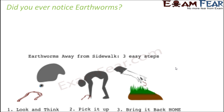Why do earthworms come to the surface during the rainy season? When there is too much rain, too much water gets collected in the soil. All the spaces between the soil particles get filled with water, so there is no space left for air. Since there is no air within the soil, and earthworms need oxygen to survive, the only choice they have is to come out to the surface to breathe in air, because oxygen is present in the surrounding atmosphere.